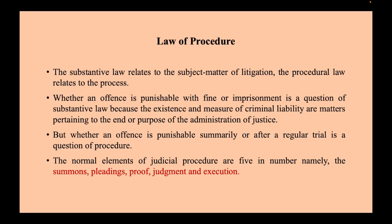Why is it so? Because the existence and measure of criminal liability are matters relating to the object which the administration of justice is required to achieve. But whether an offence is punishable summarily or after a regular trial is a question of procedure.